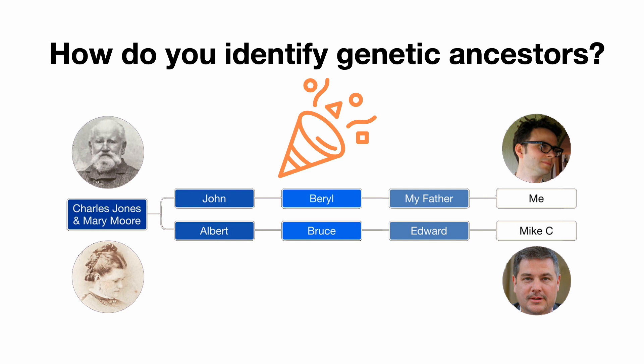So how do you identify genetic ancestors? It's as simple as whenever you have one of those eureka moments — yes, I know who this DNA match is, I can figure out what connects us. You then have to go up to the common ancestors for that DNA match, and at this point you can infer with some confidence that you did inherit DNA from those people. It is of course possible that the DNA you share with that person is from another relationship, but it seems likely that it's down to the relationship that you know about, particularly if it's a reasonably close match.